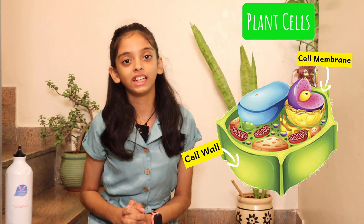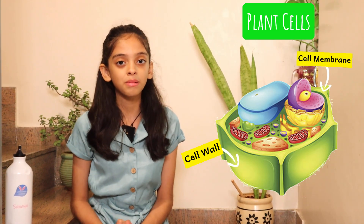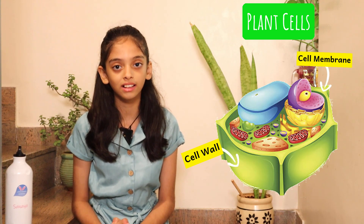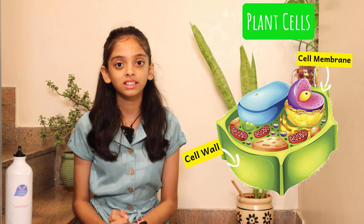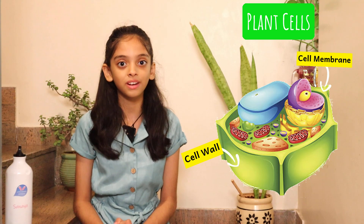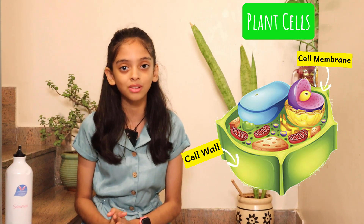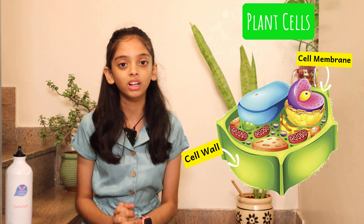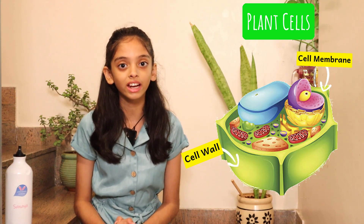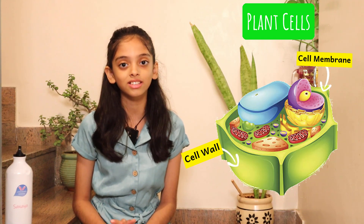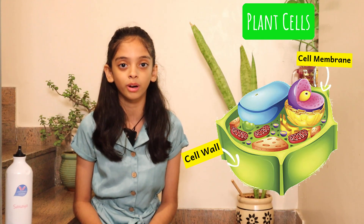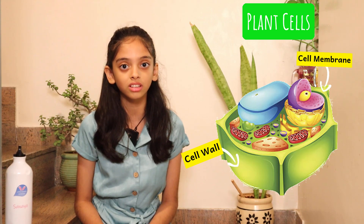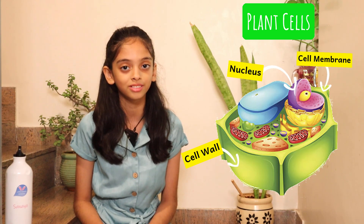Now the next one is the cell membrane. The cell membrane is on the inner side of the cell. It is very thin and flexible, like a soap bubble, and it controls what goes inside and outside of the cell — just like a society gatekeeper that controls who goes inside the society and out.